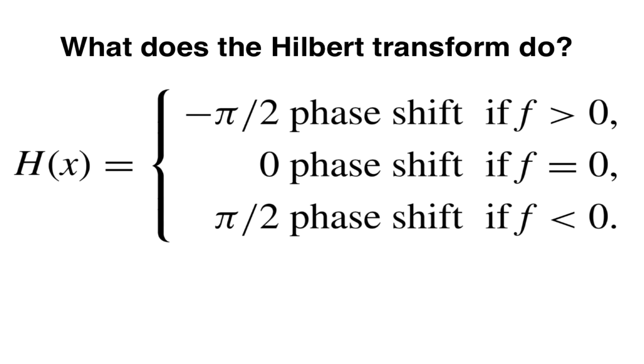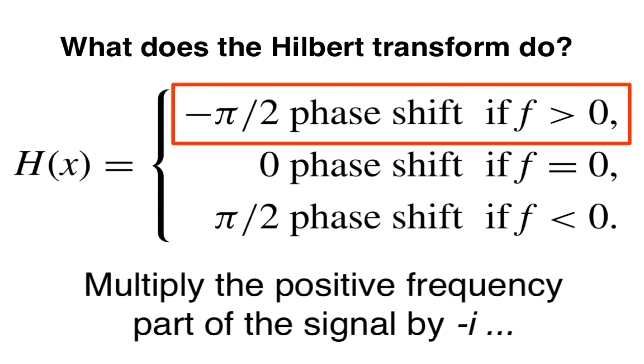Now we said that by definition, the effect of the Hilbert transform is to induce a phase shift. We said that for positive frequencies, the phase shift is negative pi over 2. Now it turns out we can produce this phase shift by multiplying the positive frequency part of the signal by minus i.